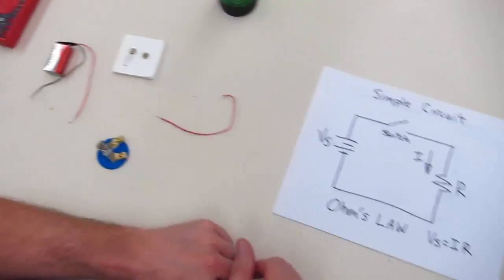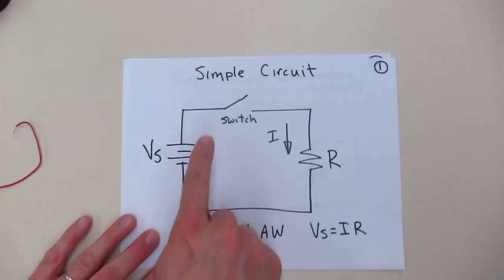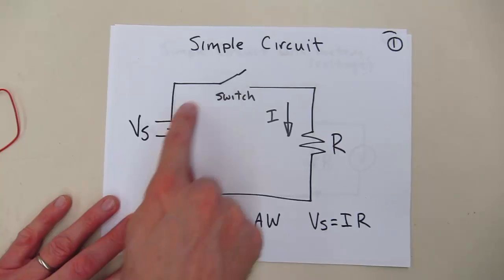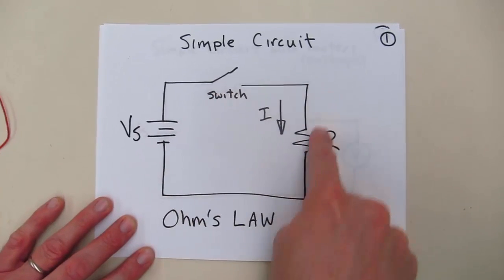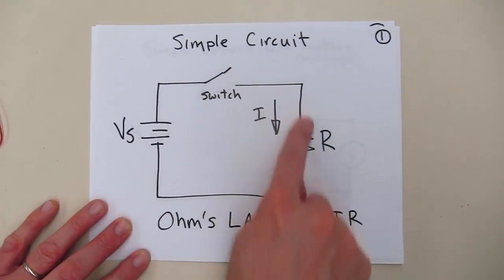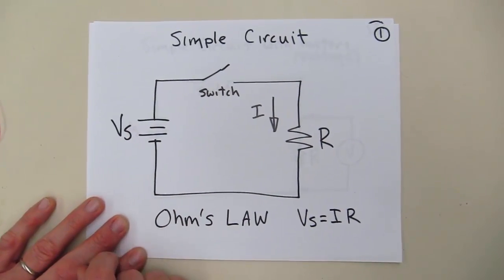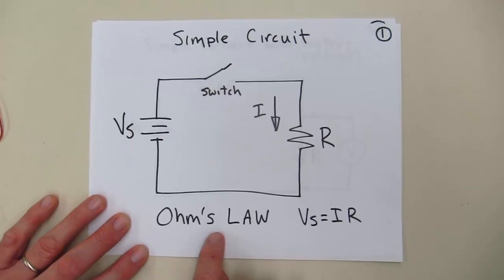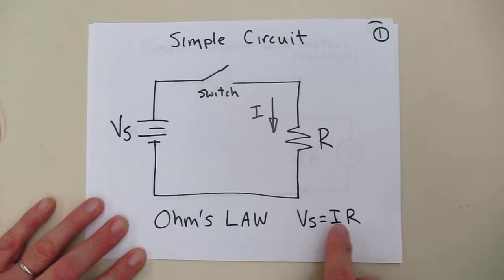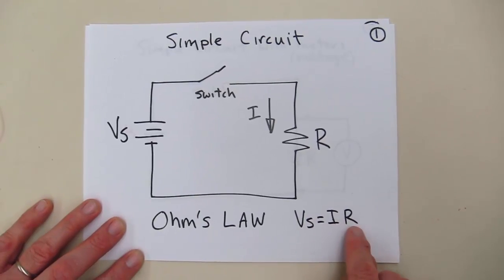Let's take another quick look at this circuit. Any simple circuit is going to have a power supply, or in our case we're calling it a voltage supply, a switch, a resistor, and that closes the loop. So this is a simple circuit that we'll be working with. What we're trying to explore is Ohm's Law, which tells us that the voltage on this circuit is equal to the current times the resistance.